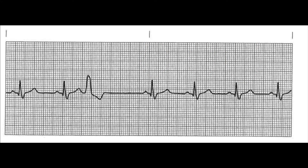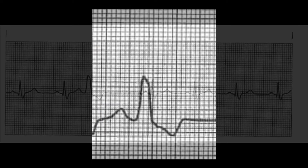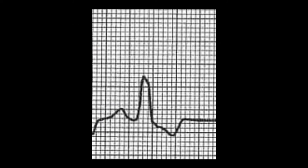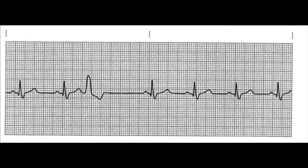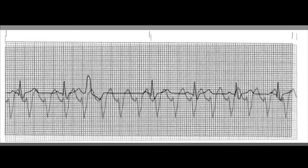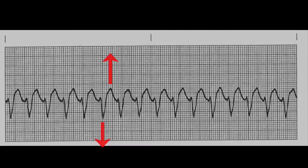Another telltale clue that you are looking at a ventricular beat is that the T-wave typically travels in the opposite direction of the QRS. It isn't really surprising that when you have a big, ugly depolarization in one direction, you're likely to see a big and equally ugly repolarization moving opposite that. This feature is often clearly visible in PVCs, as well as in most ventricular rhythms.